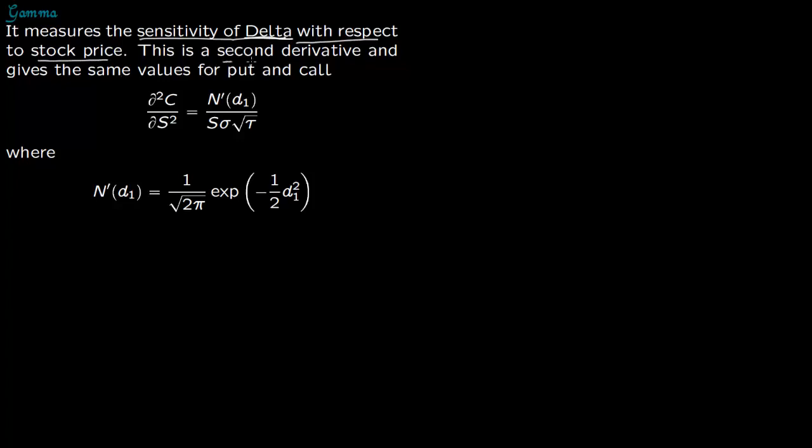This is the second derivative and it gives the same values for put and call. Basically what it does is you take the partial of Delta, and Delta is the partial of the call price with respect to the stock price. So this is our Delta, and then you take another partial of it with respect to the stock price.